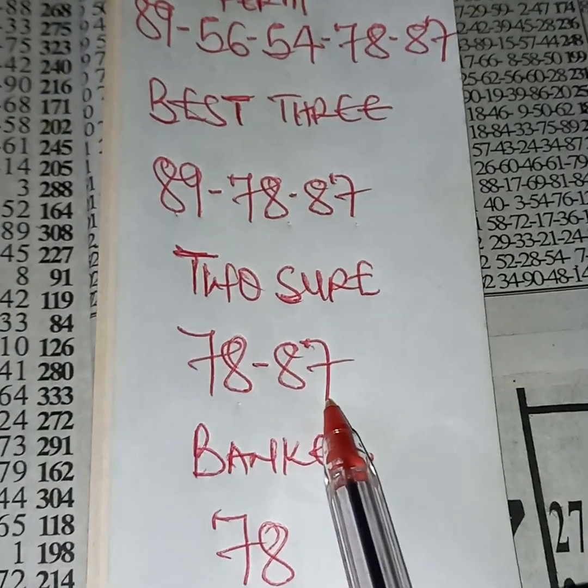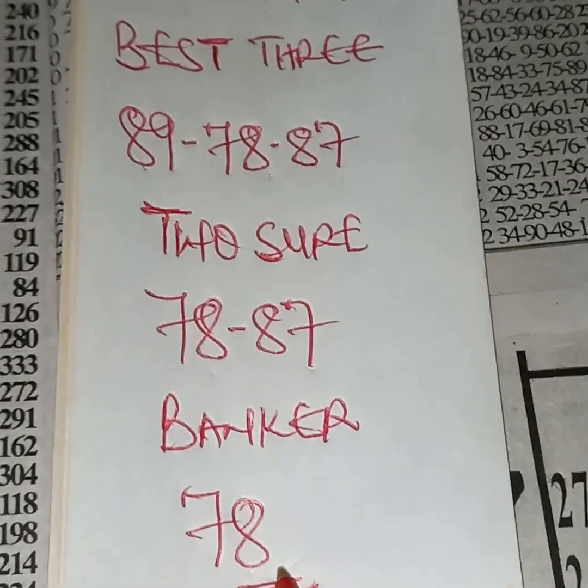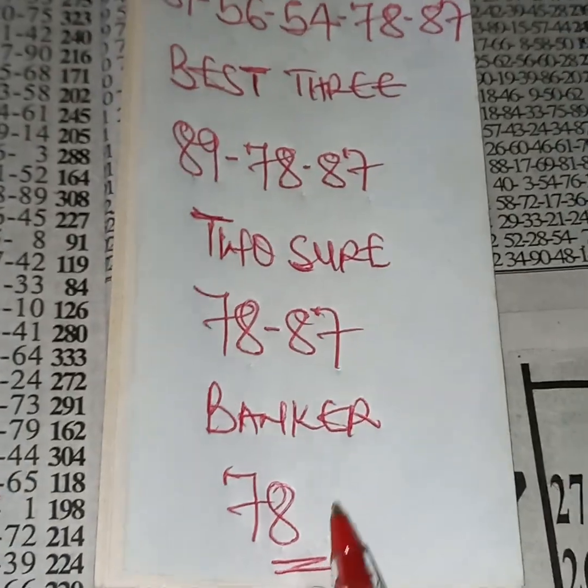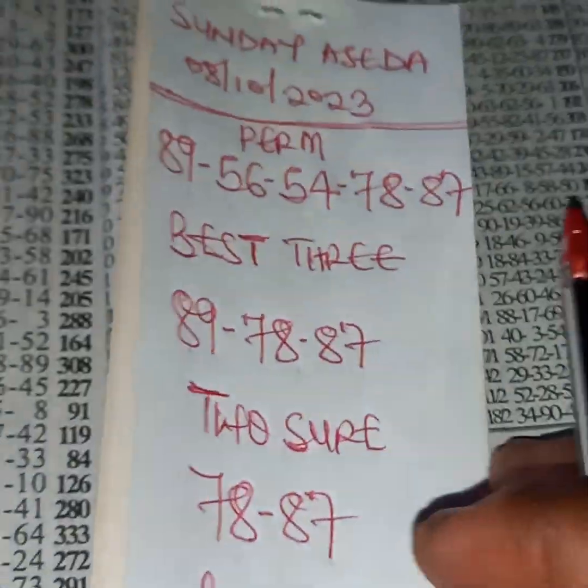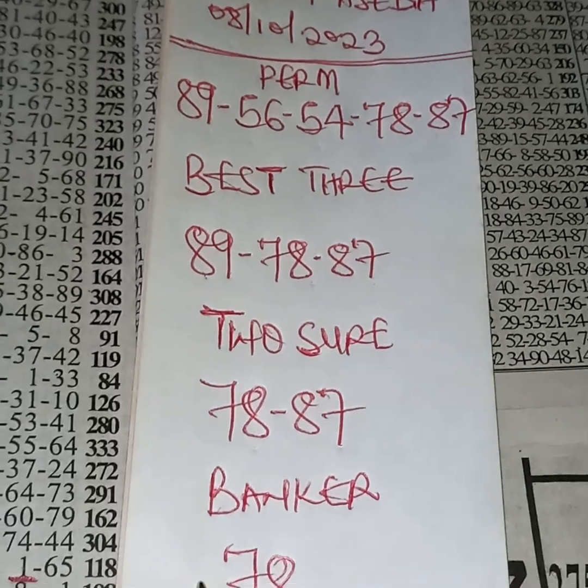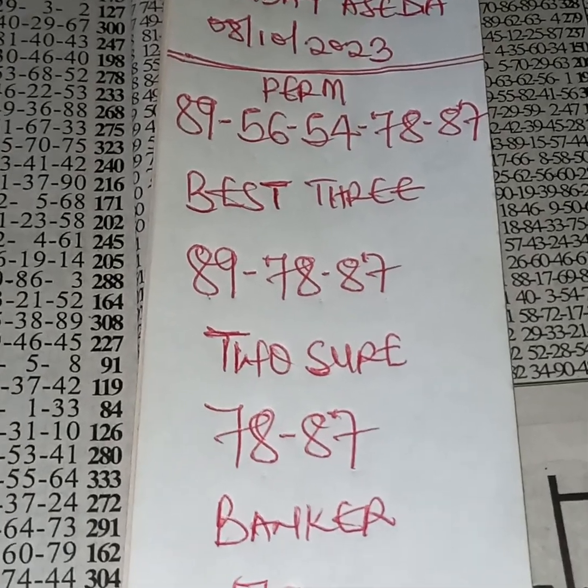Our two sure is 78, 87 home and away. Our banker for Sunday Asada is 78. This is the game we are sticking for Sunday Asada. All right, good luck to all, and congratulations in advance. Bye bye.